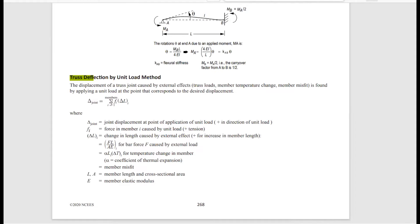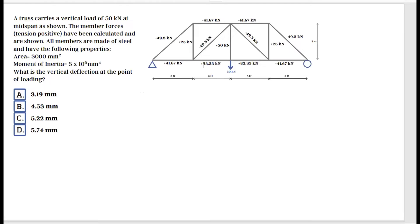Let me zoom in a bit. The formula is the sum of lowercase f multiplied by ΔL. Lowercase f is the force in a member caused by a unit load. To find it, we remove the 50 kN load at that point and replace it with a unit load, then calculate the forces in each member caused by that unit load.